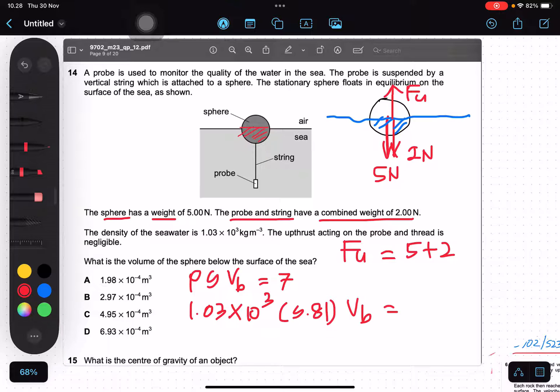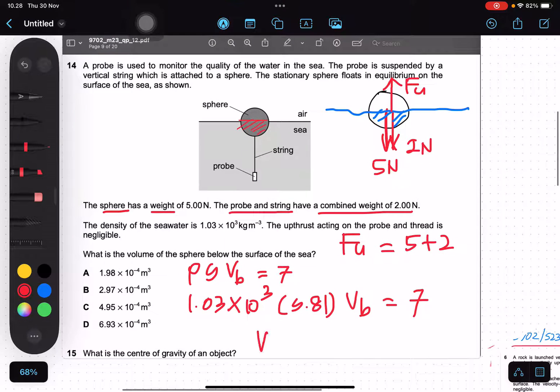Volume equals to 7 divided by 1.03 times 10 to the 3 times 9.8. We get 6.93 times 10 to the power negative 4 in meter cubic.